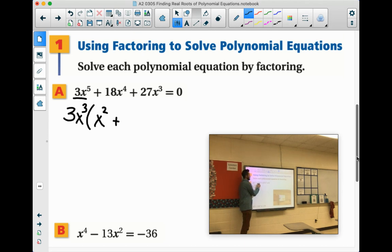Now I've got to get to 18x to the 4th. So 3 times 6 is 18x to the 3rd. I need one more x. And then the last one, 3x to the 3rd. To get 27x to the 3rd, we would just have to multiply by 9. Cool.